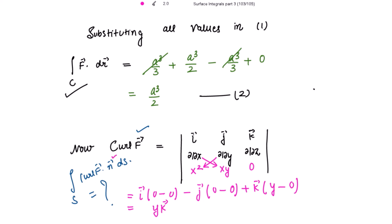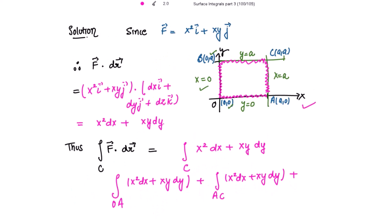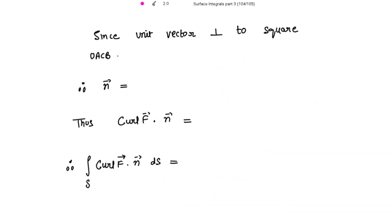Since the unit vector is perpendicular to the square OACB, which is in the xy plane, n vector = k vector. The dot product of curl F with n vector is: y k vector dot k vector. Since k·k = 1, this gives y. So the surface integral becomes the integral of y ds.